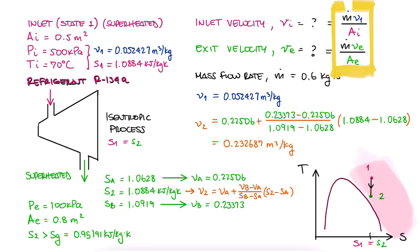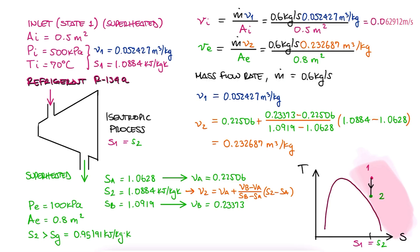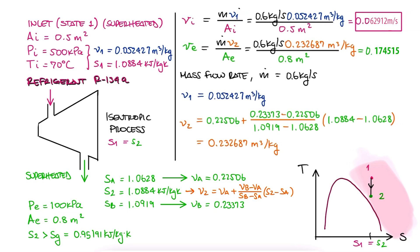And now that we have both V1 and V2, we can substitute in our original expression for velocity, including the area and the mass flow rate, to find that the velocity at the inlet is 0.062912 meters per second, and that the velocity at the exit is 0.174515 meters per second.